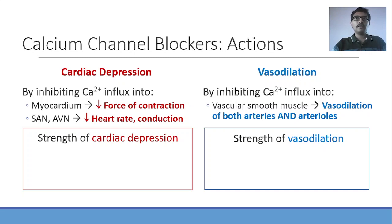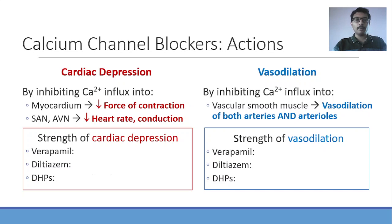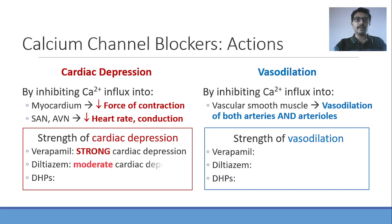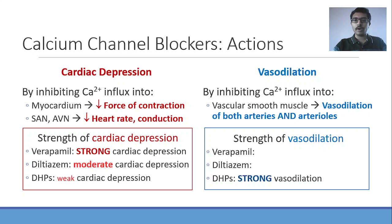To elaborate: cardiac depression occurs by inhibiting calcium influx into myocardial cells (reducing force of contraction) and inhibiting calcium influx into the SA and AV nodes (reducing heart rate and cardiac conduction). Vasodilatation occurs by inhibiting calcium influx into vascular smooth muscle, dilating both arteries and arterioles. In terms of strength: cardiac depression — verapamil (strongest), diltiazem (moderate), dihydropyridines (weak). Vasodilatation — dihydropyridines (strongest), verapamil (moderate), diltiazem (weak).